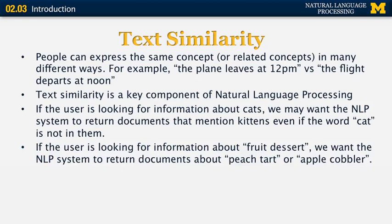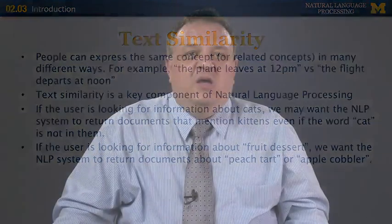Another example is if the user is looking for information about a fruit dessert, we may want the NLP system to return documents about peach tarts or apple cobblers. In each of those examples, we have a specific fruit and a specific dessert, but both of those items are special cases of 'fruit dessert'.